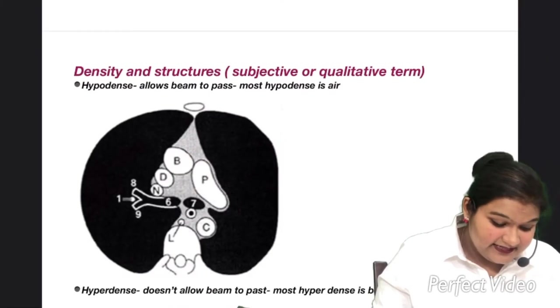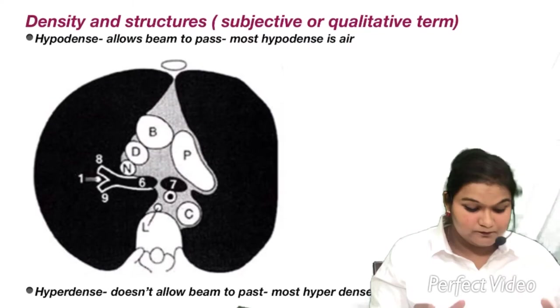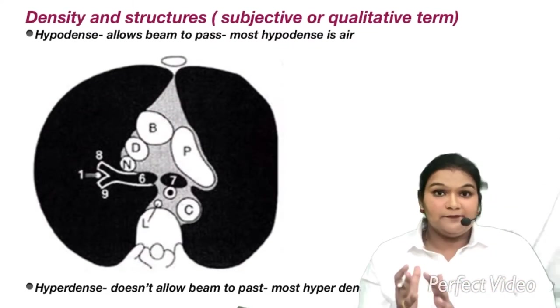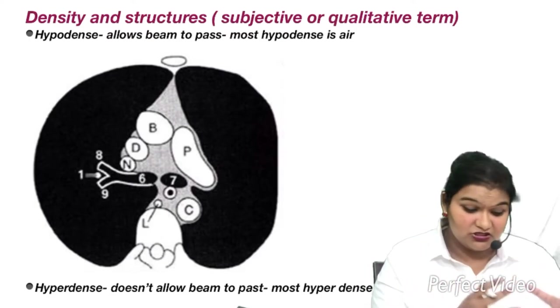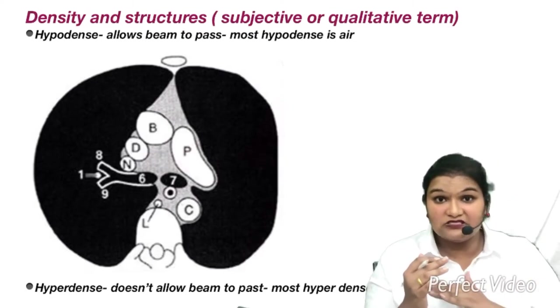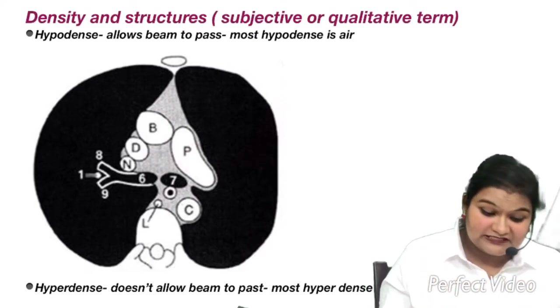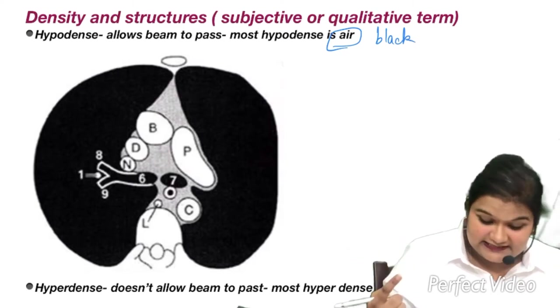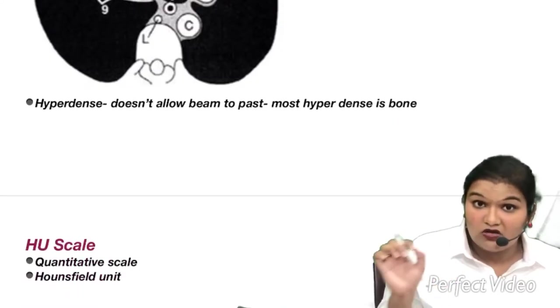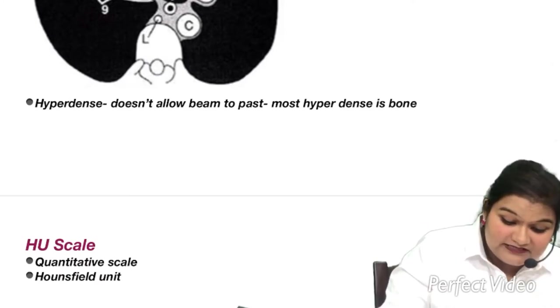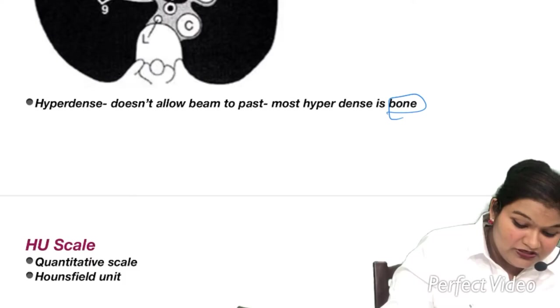Now let us see the density and the structures. In CT scan, we have hypodense structure and hyperdense structure. Hyperdense structures are basically those which allow the X-ray to pass through and through. The most hyperdense structure is air and this air appears black on the CT scan. Whereas the hyperdense structure does not allow the X-ray beam to pass through it, and hence the most hyperdense structure is bone and it appears white.